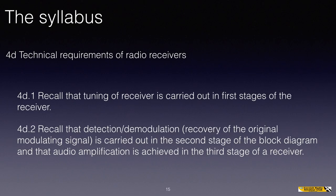The technical requirements of radio receivers: recall that tuning of a receiver is carried out in the first stages of the receiver. There is a selective tuned circuit in the front end, and by turning the tuning knob you select only the signal that you want to listen to. 4D2 says recall that detection or demodulation — those two words are synonymous — also meaning recovery of the original modulating signal, the AF signal that came out of the microphone in the transmitter, is carried out in the second stage of the block diagram, and that audio amplification is achieved in the third stage.